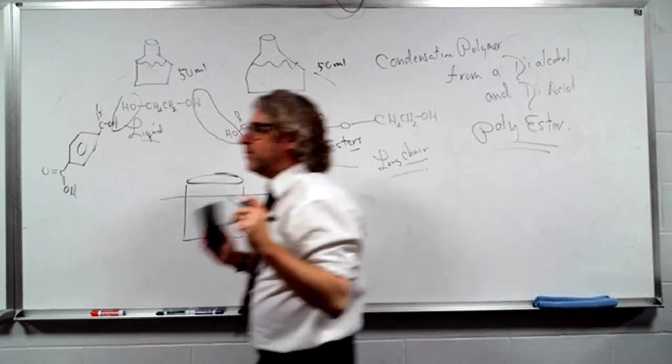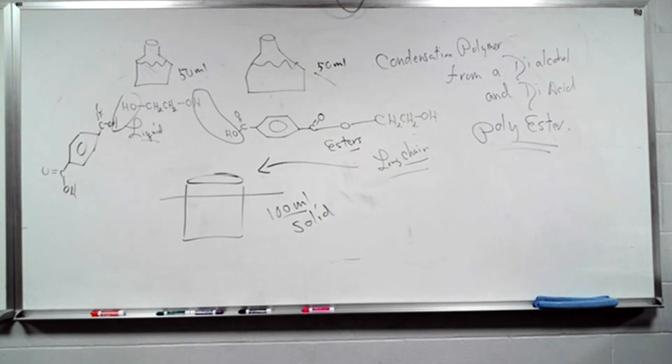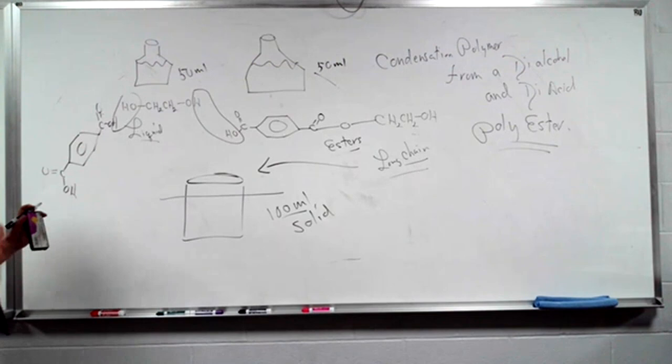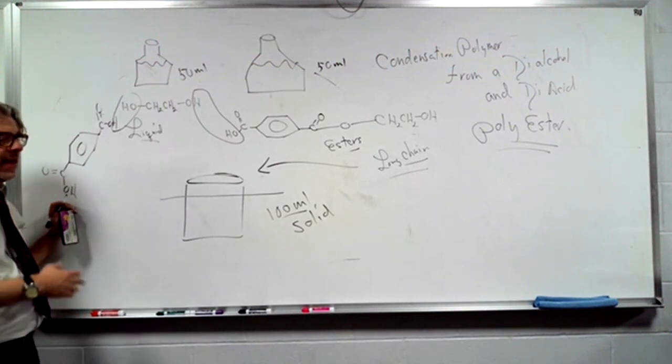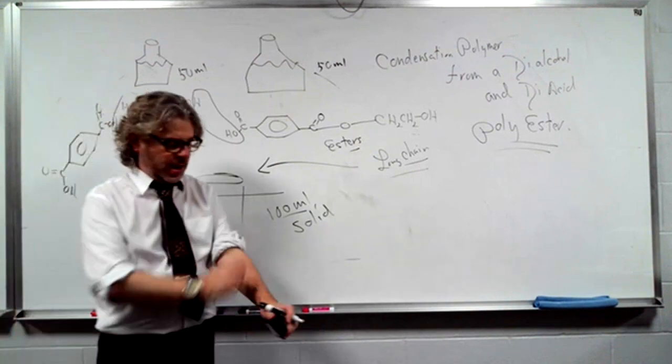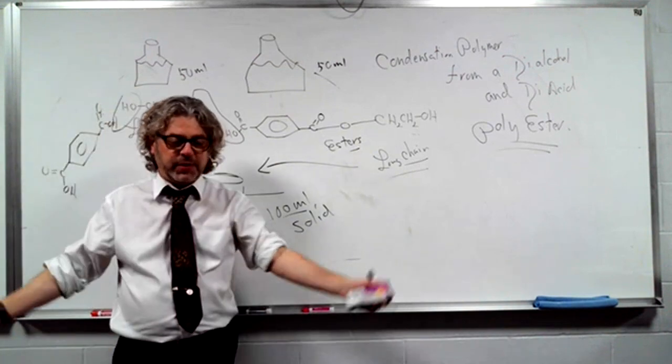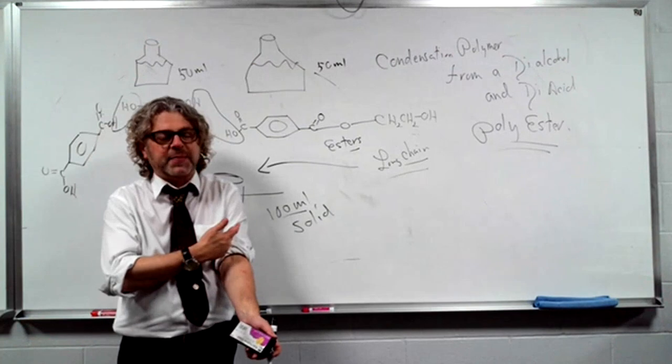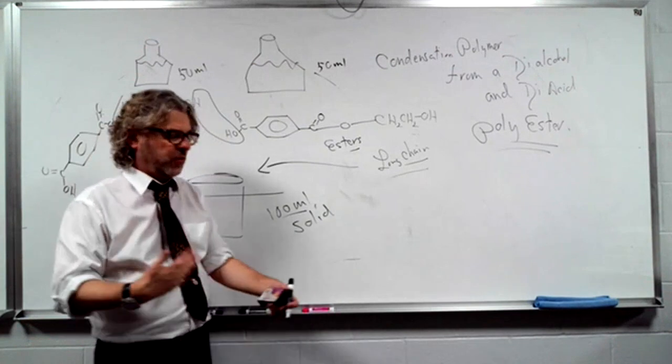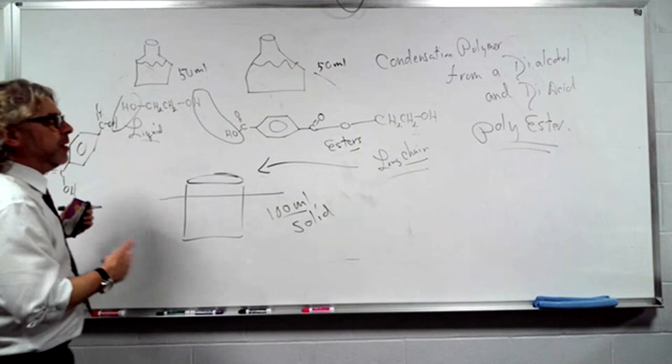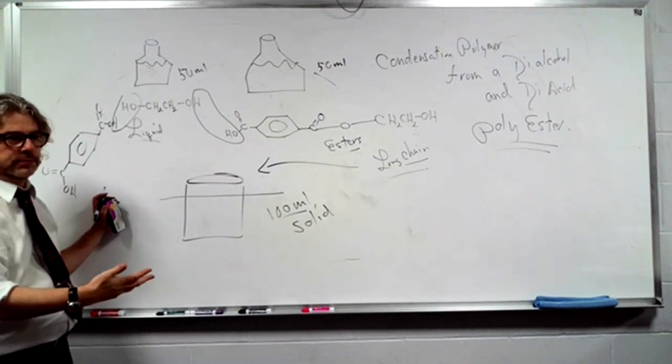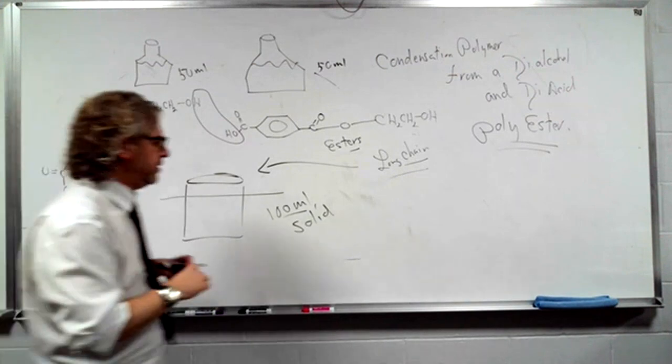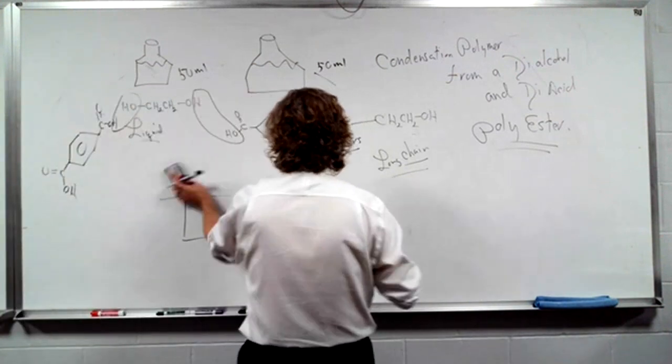This would be called a polymer. Take out the water, a bunch of esters. A condensation polymer from a diol and diacid is called a polyester. There's only so much cotton in this world for you to wear. Cotton needs to be ironed. Most of you are wearing polyesters.